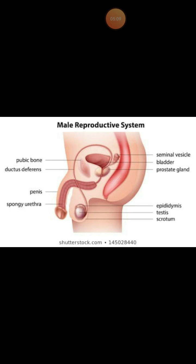The secretion of the Cowper's glands serves as a lubricant. The urethra passes through the penis and carries either the urine or the semen.